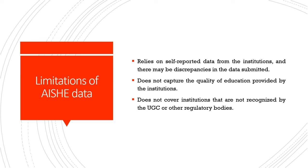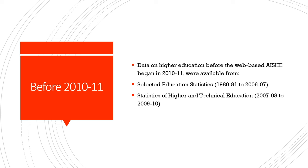Before 2010-11, data on higher education came from two sources: Selected Education Statistics for the period 1980-81 to 2006-07, and Statistics of Higher and Technical Education from 2007-08 to 2009-10. Many of these reports are available online. Anyone wanting to look at comparability of progress in higher education over the last 40 years can make use of this data. While some data may not be strictly comparable, it is possible to examine the growth of higher education institutions over different time periods.